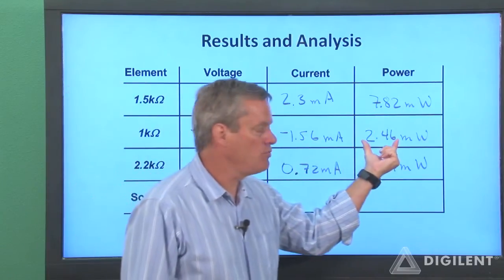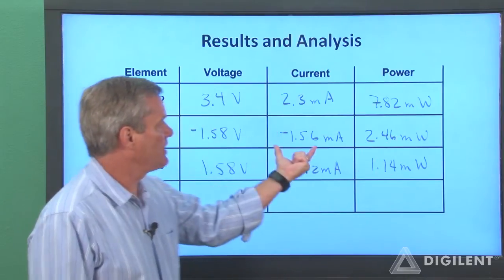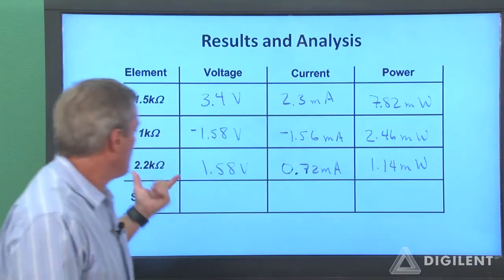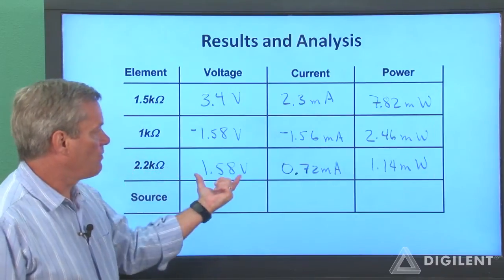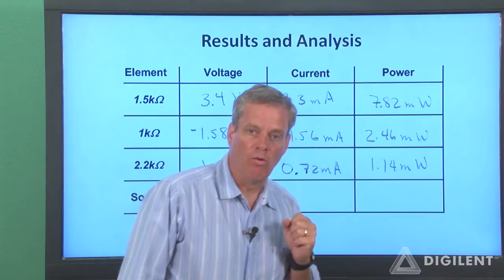For the 1 kiloohm resistor, we have 2.46 milliwatts dissipated, because a negative times a negative becomes a positive. For the 2.2 kiloohm resistor, we get an absorbed power of 1.14 milliwatts.